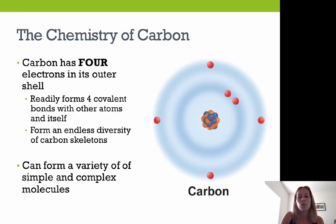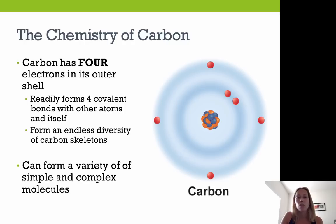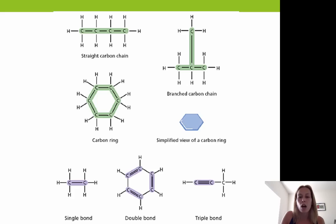So, chemistry of carbon. Carbon has four electrons in its valence electron shell — four valence electrons. As a result, carbon can form covalent bonds very readily with other atoms. Carbon can form straight chains, branched chains, rings, and also single, double, or triple bonds.